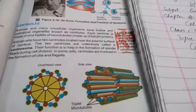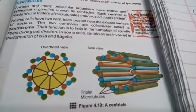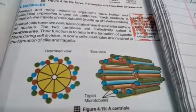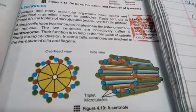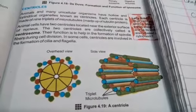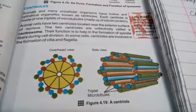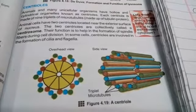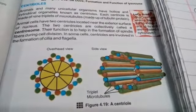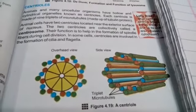Centrioles, as you are watching in the video and on the textbook, are found in animals and other unicellular organisms. They are cylindrical shape, hollow, and cylindrical organelles.